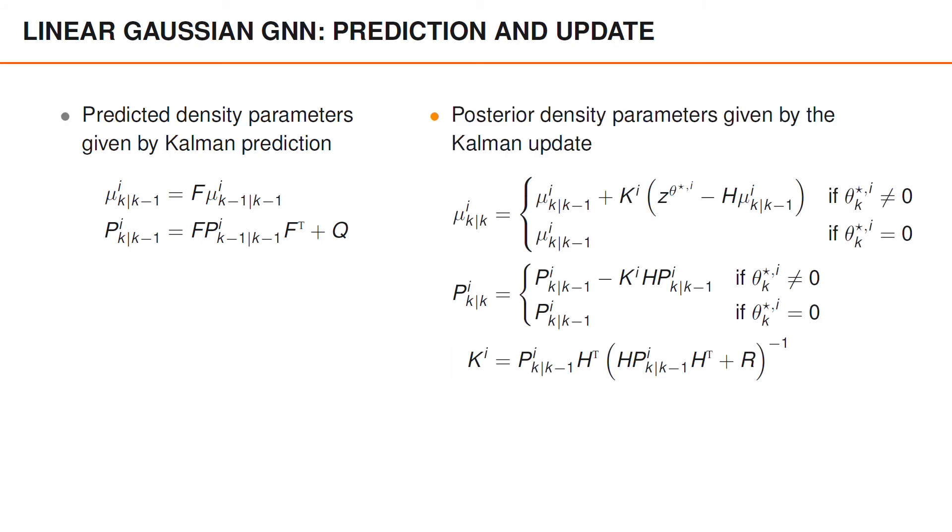And in the update, the posterior Gaussian parameters are given by the Kalman update. If a detection is associated, and if a detection is not associated, then the posterior mean and covariance are equal to the predicted ones.